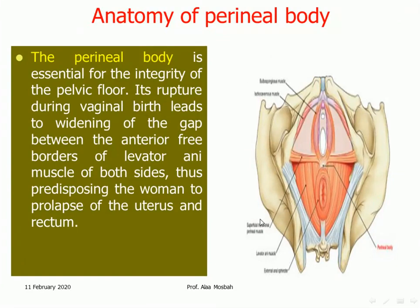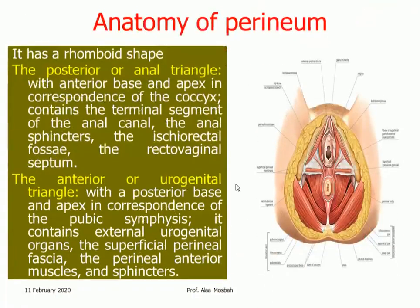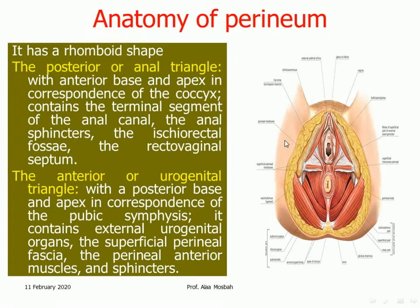The perineal body is essential for integrity of the pelvic floor. Its rupture during vaginal delivery leads to widening of the gap between the anterior free borders of the levator ani muscles of both sides, thus predisposing the woman to prolapse of the uterus, rectum, and sometimes the bladder. The perineum has a rhomboid shape, and a transverse line from the transverse perineal muscles divides the perineum into two triangles. The urogenital triangle contains the urogenital organs, and the posterior or anal triangle contains the anus, the ischiorectal fossa, and rectovaginal septum.